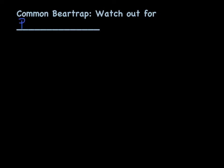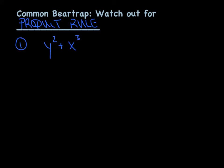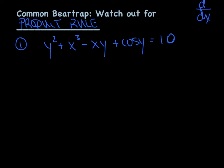Now that we've thoroughly beaten up that idea of emphasizing chain rule with regards to an implicit problem, let's actually try one. Perhaps the AP's favorite bear trap — really watch out for product rule here. They're going to try to be very subtle with it and try to sneak it by you, but we're going to be razor sharp in catching it. So let's say they gave us the equation y squared plus x cubed minus xy plus cosine of y equals 10. You'll agree right away that this is an implicit equation, because neither variable is solved for or isolated, and they want us to derive it with respect to x.